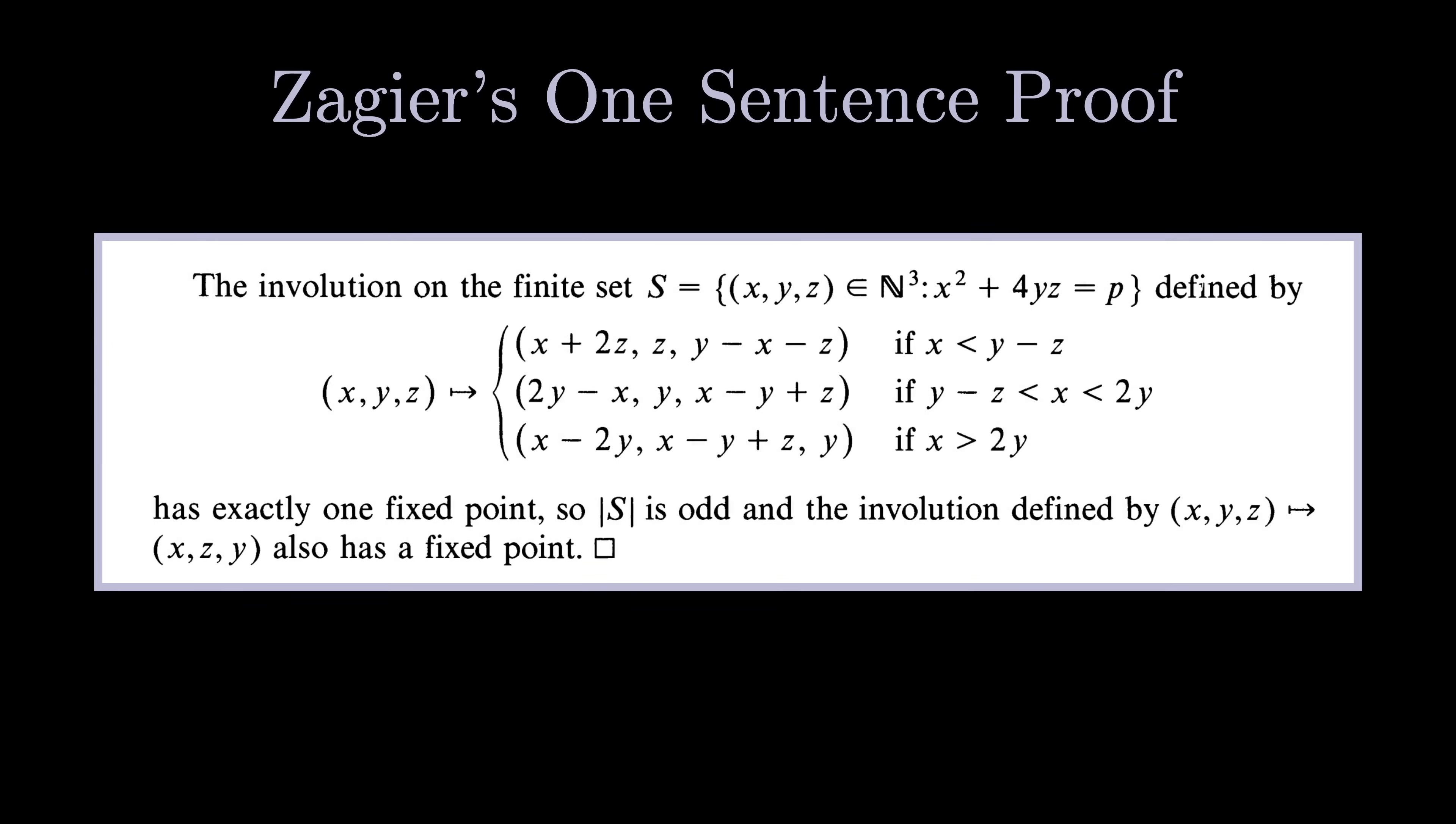Let's finish it off by going back to the one-sentence proof to see that it makes sense. We start out by defining S, the set of windmills, then we define the Zagier map, stating that it has one fixed point. This implies that the size of the set is odd and that the flip map also has a fixed point, implying that we can break down the prime p = 4k+1 into a sum of two squares.